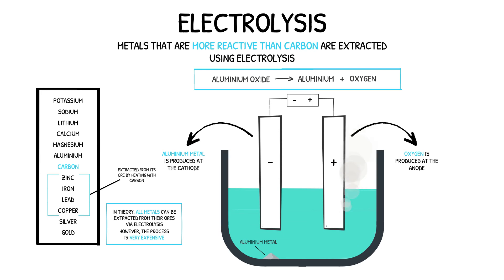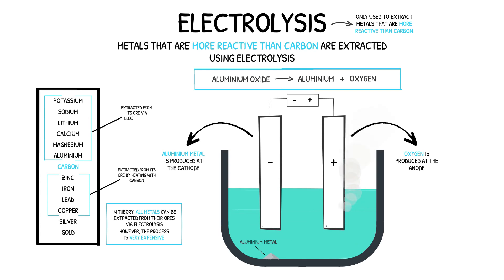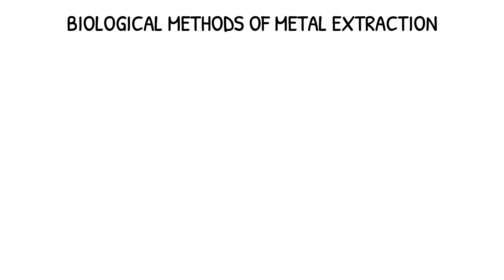In theory, all metals can be extracted from their ores via electrolysis. However, a lot of energy is required to keep the ores in molten form, making it a costly process. Because of this, electrolysis will only ever be used as an extraction method for metals that could not be extracted by heating with carbon.